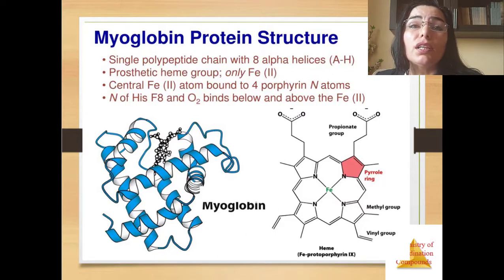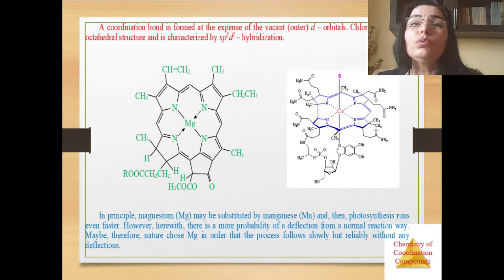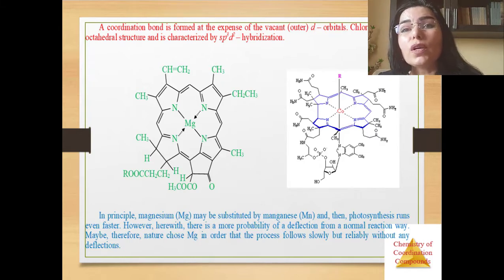Nevertheless, there is an exception. A respiratory pigment hemocyanin containing copper instead of iron is dissolved in blood of calamari, snails and spiders. Upon transfer of oxygen, blood, more exactly hemolymph of these arthropods, is colored blue. Ability of hemocyanin to transfer oxygen is five times lower than that of hemoglobin.